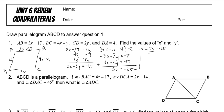We divide by negative 5 on both sides, so X is 5. Now that we know X, we plug it back into one of the original equations. I'm going to do the first one: 3 times 5 plus 17 is equal to 2Y. 3 times 5 is 15. 15 plus 17 is 32. Divide by 2 on both sides, and Y is 16.